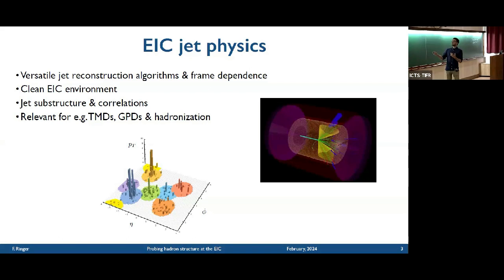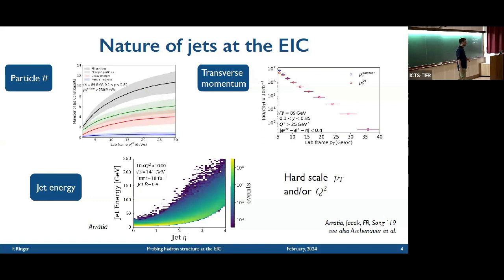The two main things are jet substructure and jet correlations, where you basically look at the global topology of where the jets are in the event. Depending on what observables you construct, you're sensitive to TMDs and various non-perturbative aspects that you might be interested in.